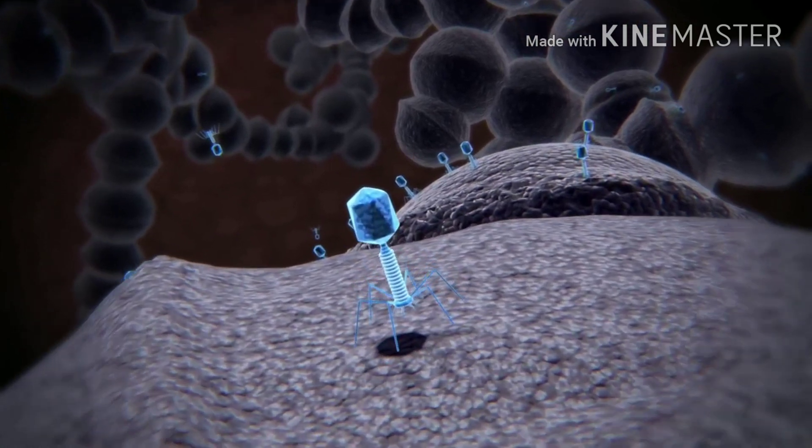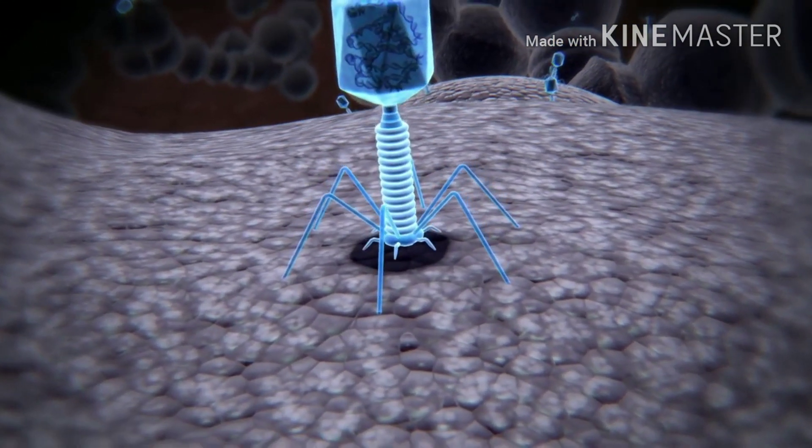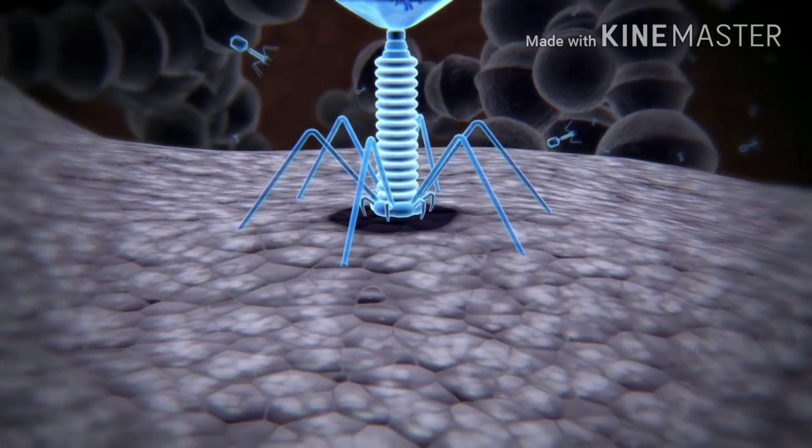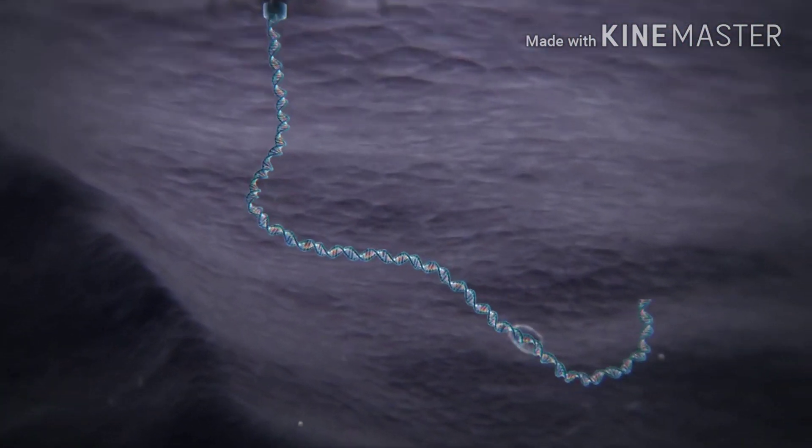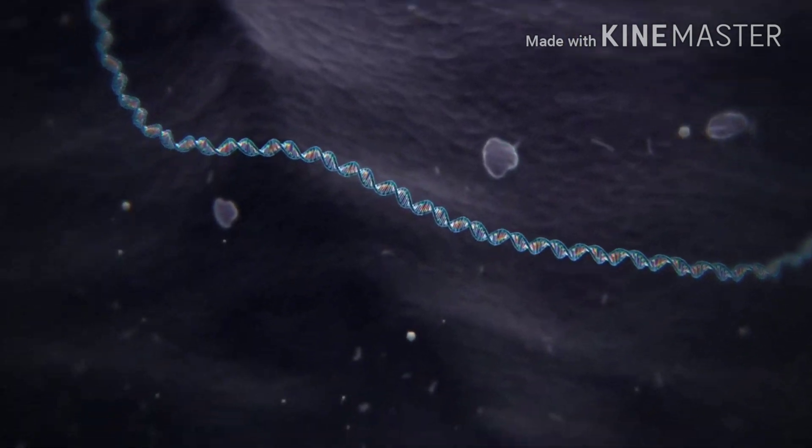Bacteria is always under attack by special viruses called phages, which kill 40% of them every day. The virus injects a part of its own DNA into bacteria and overrides the nucleus to use it as a minting machine to replicate itself.